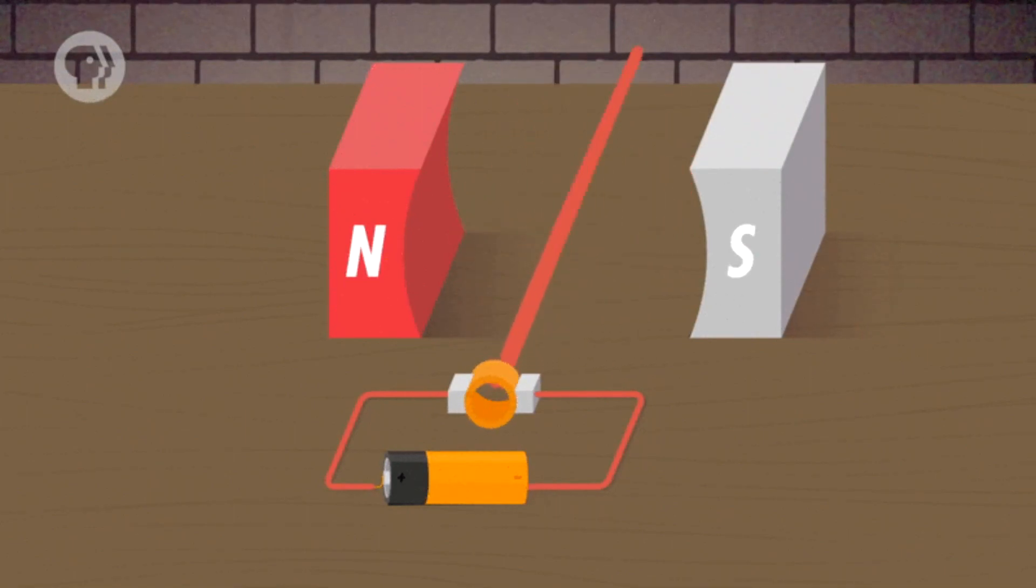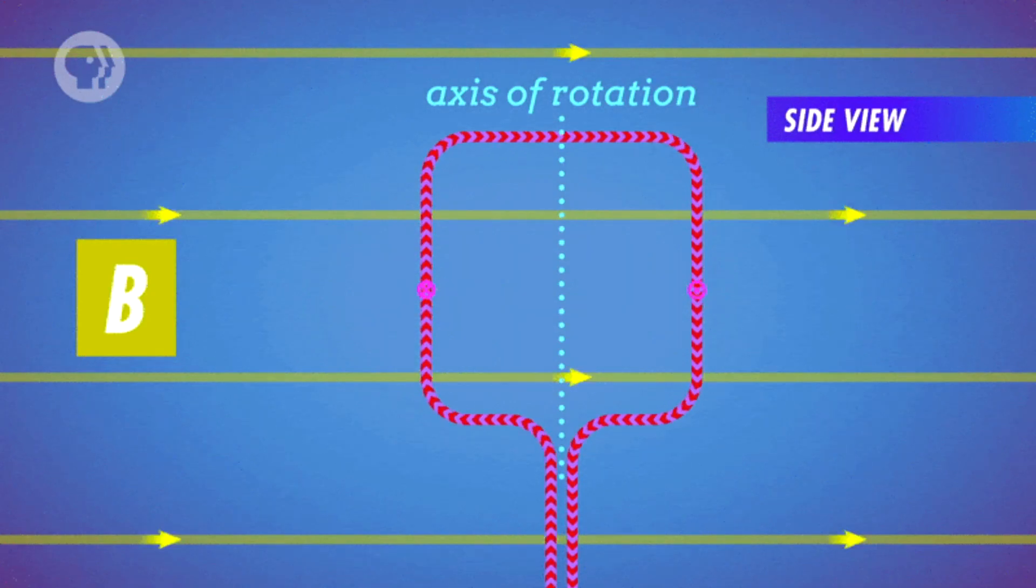When you stick a loop of wire in the magnetic field, something a little strange happens: the loop of wire turns and rotates. But why does it rotate?